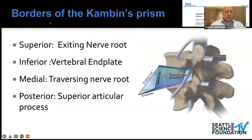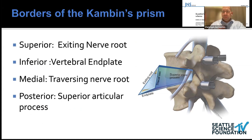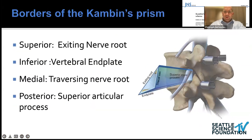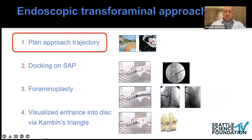Let's talk about Kambin's triangle. Dr. Wang and his group provided a really innovative clarification — in the original paper, Kambin listed four borders and called it a triangle, but Mike Wang was smart enough to figure that out and defined it as a prism, which is brilliant. The superior nerve root defines the rostral aspect, the inferior vertebral endplate of the caudal index level is another border, medially is the traversing nerve root, and posteriorly is the superior articular process, which really limits the width of this region for entrance.